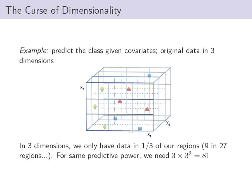In three dimensions, you can see this cube with dividing lines. The green diamonds are on one side, blue squares on the right, and red triangles here — the data is even sparser. To get the same level of data density and the same comfort level in our predictions as we had with one dimension, we actually need 81 points instead of 9. We only went up two dimensions, and we're up to 81 points. That's the curse of dimensionality: when you're working in higher-dimensional spaces, you need a lot more data for the same predictive power.